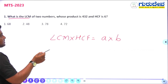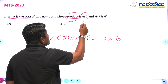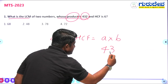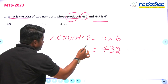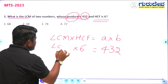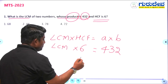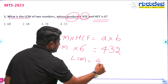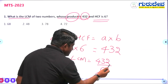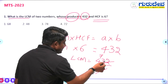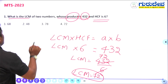He is asking what is the LCM. The product of the two numbers — that is A × B — is 432, and HCF is 6. So LCM = 432 ÷ 6. The 6 goes to the denominator. 432 ÷ 6 = 72. So LCM is equal to 72. Option number 4 is the right answer.